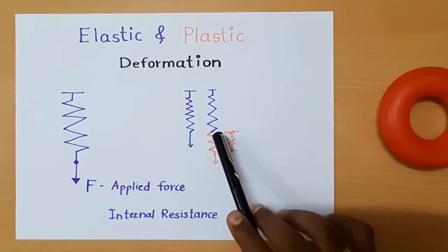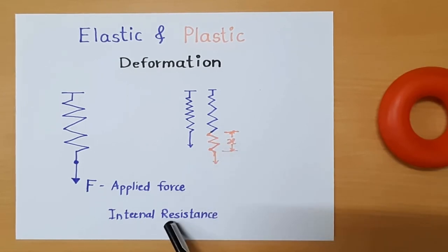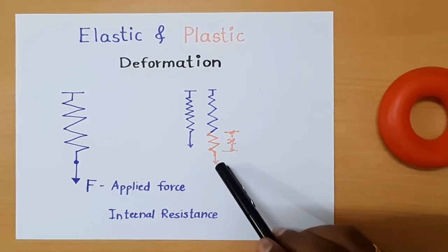Why does this happen? Because of internal resistance. When we apply the force, there will be an internal resistance offered by the body to a certain extent. That's the reason when we remove this force, that internal resistance will create an exactly opposite force.